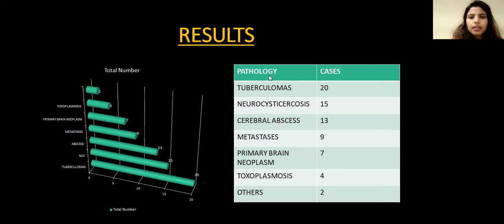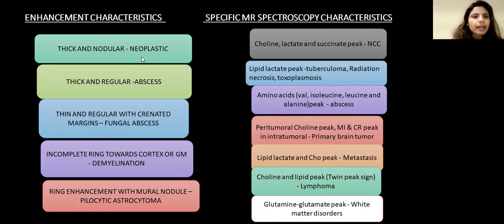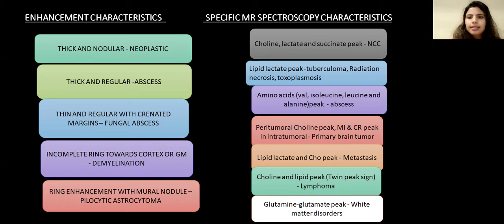Results: there were 20 cases of tuberculomas, 15 cases of neurocysticercosis, 13 cases of cerebral abscess, 9 cases of metastasis, 7 cases of primary brain neoplasm, 4 cases of toxoplasmosis, and 2 cases of others including demyelination and radiation necrosis. Enhancement characteristics: thick and nodular lesion is neoplastic; thick and regular could be abscess; thin and regular with crenated margins could be fungal abscess; incomplete ring towards cortex includes demyelination; ring enhancement with mural nodule includes pilocytic astrocytoma. Specific MR spectroscopic characteristics: choline, lactate, and succinate peaks in neurocysticercosis; lipid lactate peak in tuberculoma, radiation necrosis, and toxoplasmosis; amino acid peaks (valine, isoleucine, leucine, alanine) in abscess; peritumoral choline peak with myoinositol and creatine in primary brain tumors; lipid lactate and choline peak in metastasis; choline and lipid peak with twin peak sign in lymphoma; glutamate-glutamine peak in white matter disorders.